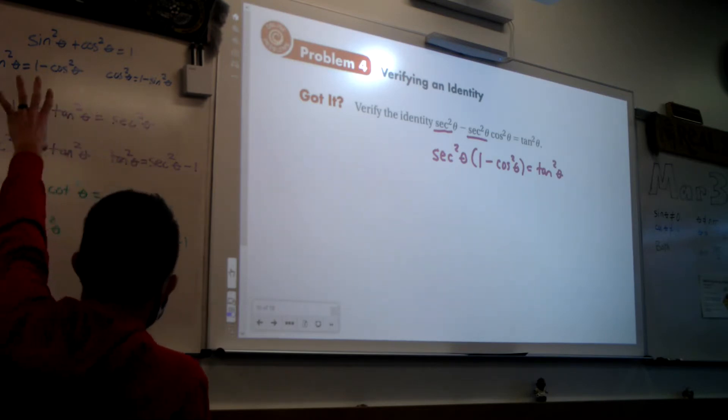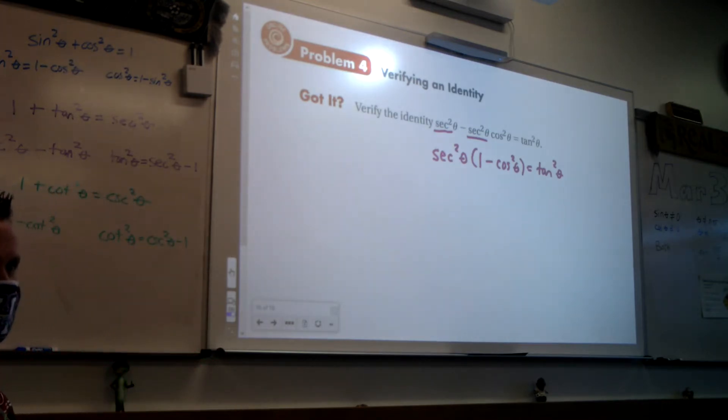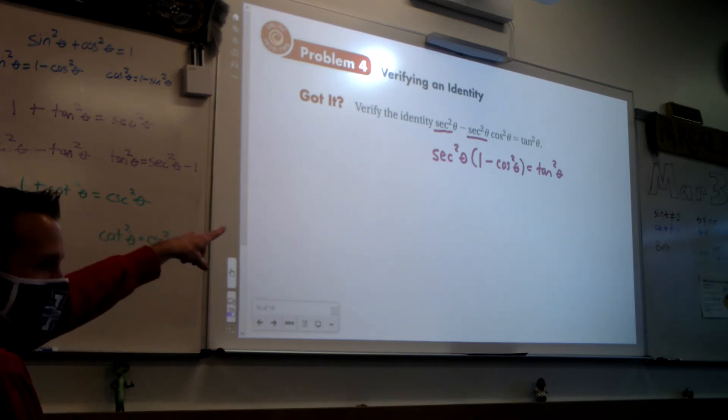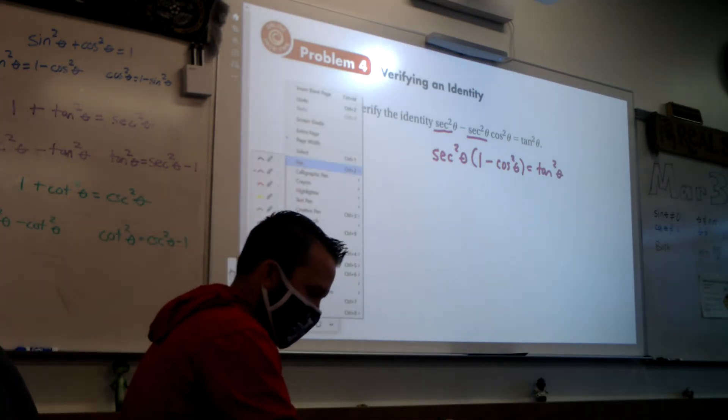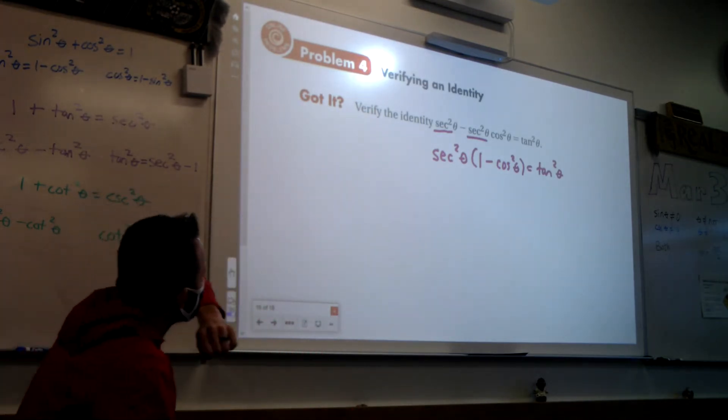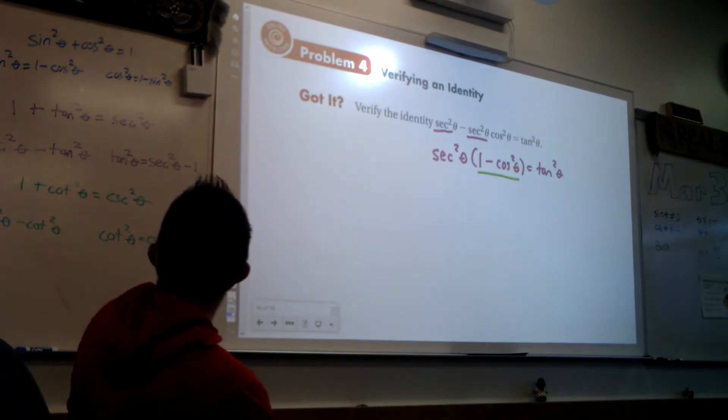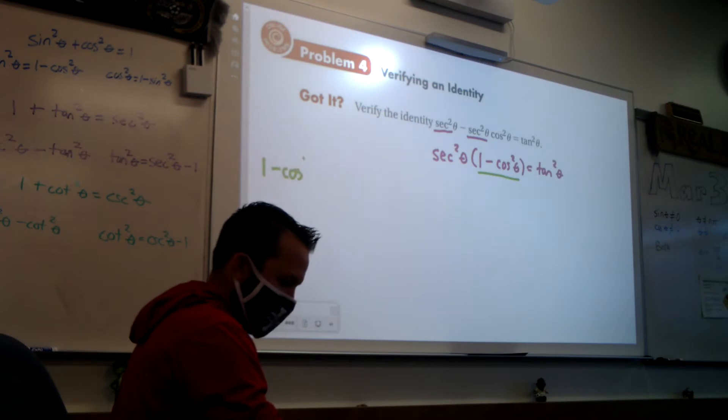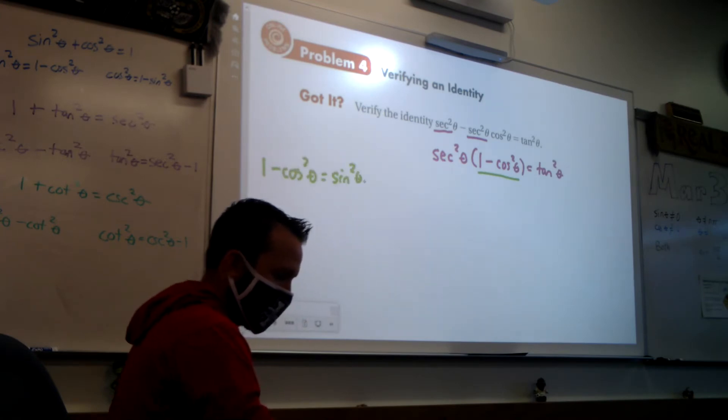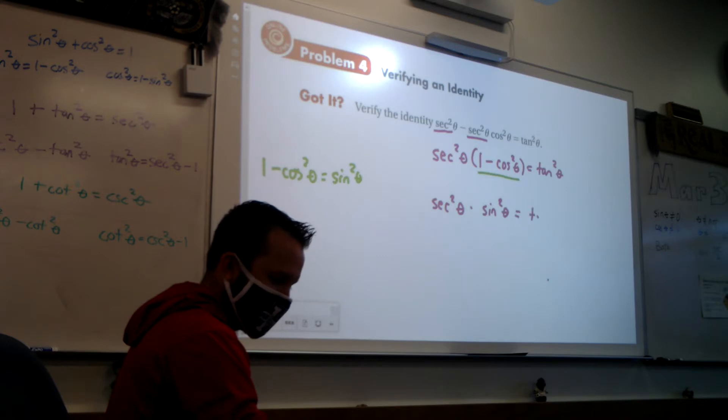Now, this is when I'm going to turn over to my list of weapons over here and say, is there any weapon I could use here to slay this trig identity? The one that's standing out to me is 1 minus cosine squared. Looking up at the blue ones, what is 1 minus cosine squared equal to? 1 minus cosine squared is sine squared of theta. So I'm going to replace that with sine squared of theta. So I get secant squared of theta times sine squared of theta is equal to tangent squared of theta.